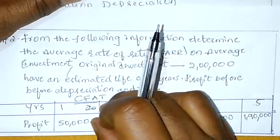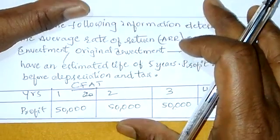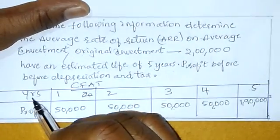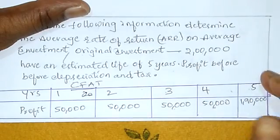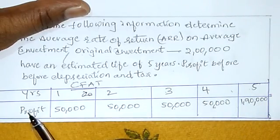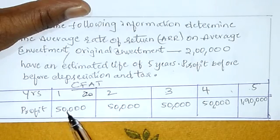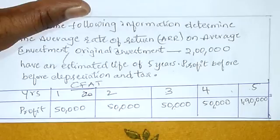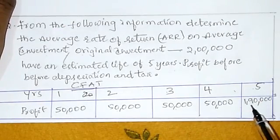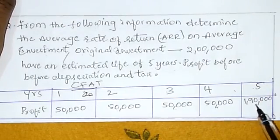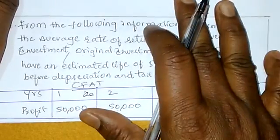Profit before depreciation and tax manaki 5 years kuh evadam jarukthi. Years 1, 2, 3, 4, 5. Before depreciation, before tax profit: 50,000; 50,000; 50,000; 50,000; and 1,90,000 — manakki 5 years profit vadam jarukthi.